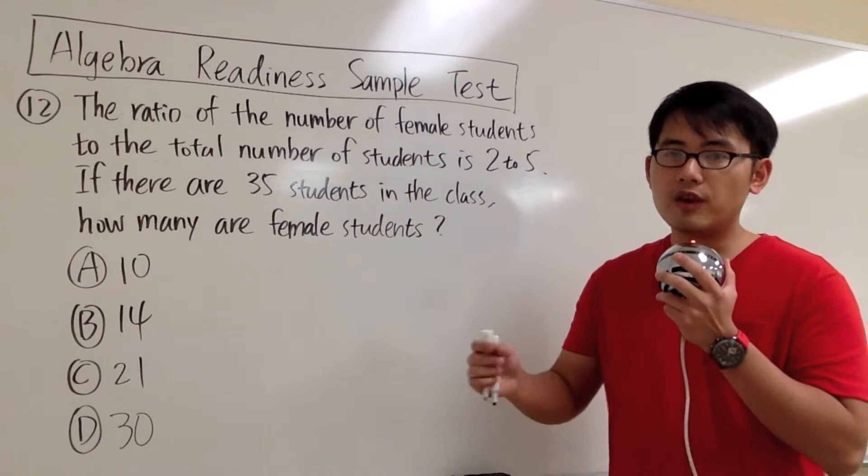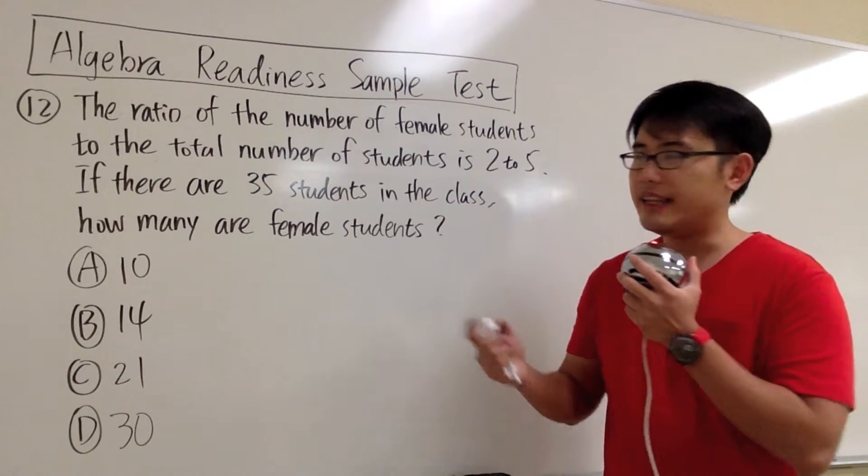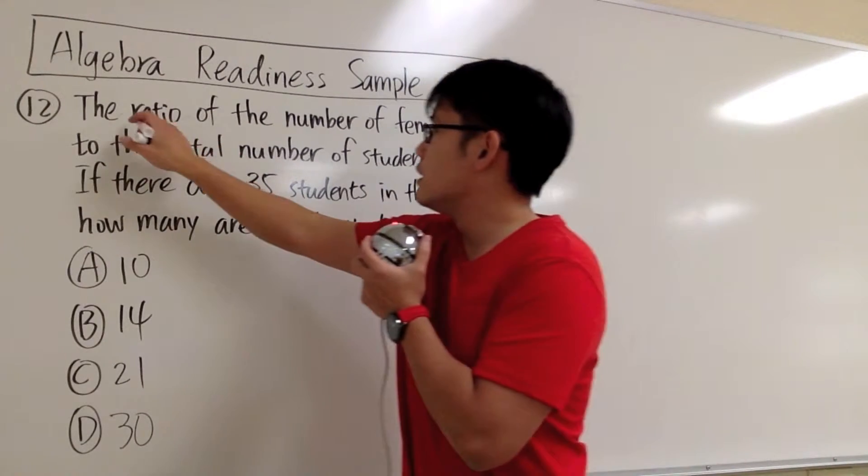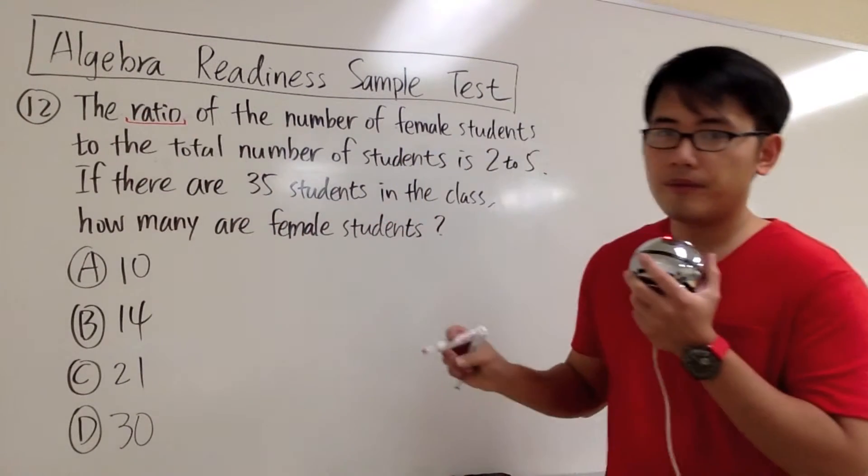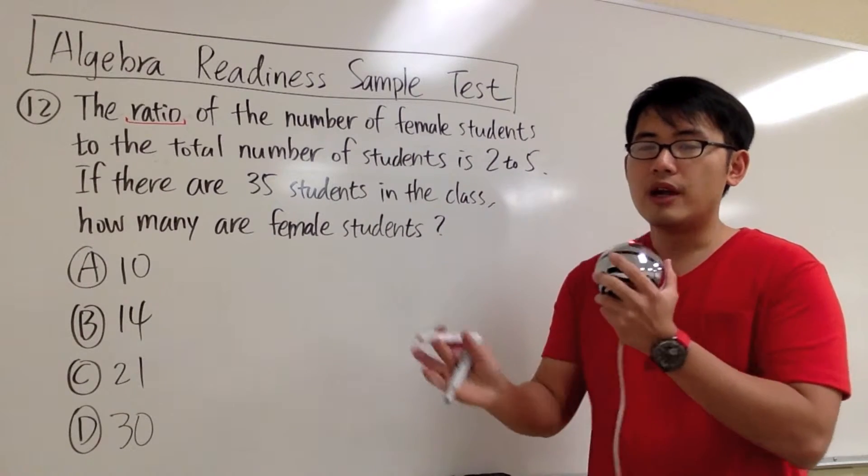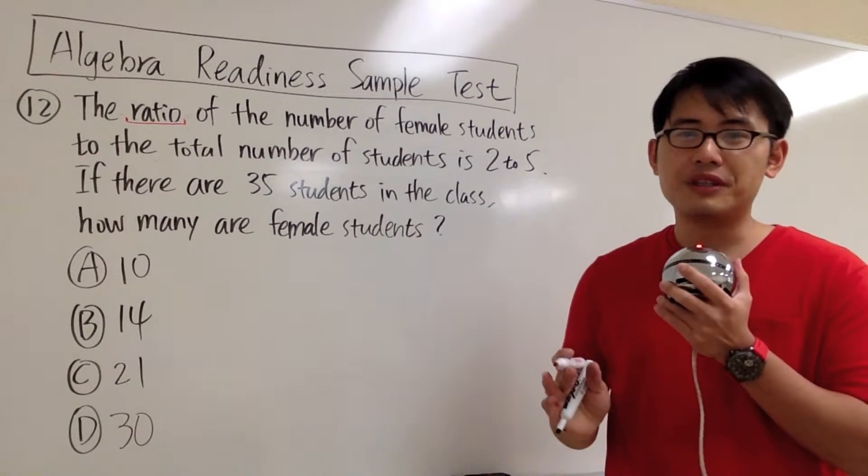This is how we're going to set up. First, we're going to pick out the keywords. The most important keyword is the word ratio. Whenever we see ratio and we're trying to solve problems, we're going to use fractions for it.